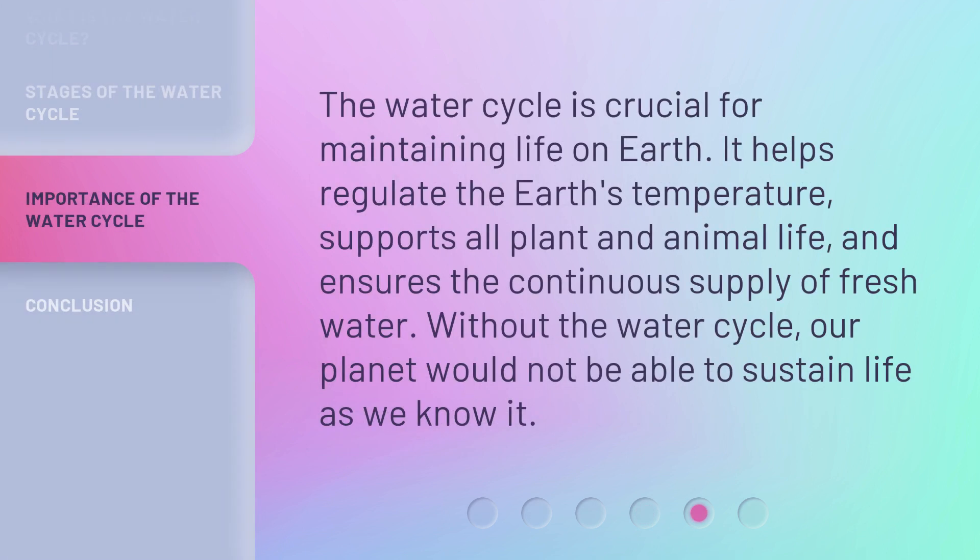The Water Cycle is crucial for maintaining life on Earth. It helps regulate the Earth's temperature, supports all plant and animal life, and ensures the continuous supply of fresh water. Without the water cycle, our planet would not be able to sustain life as we know it.